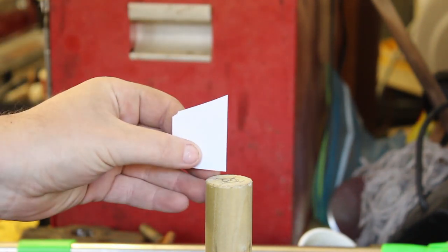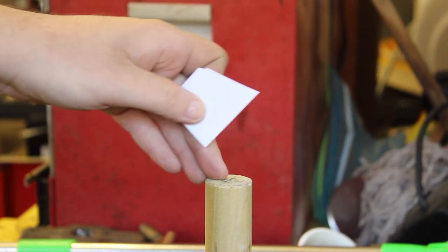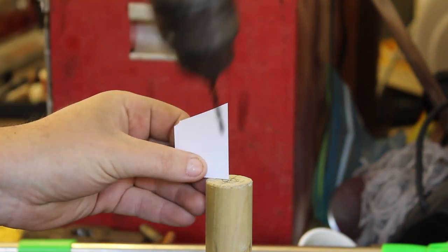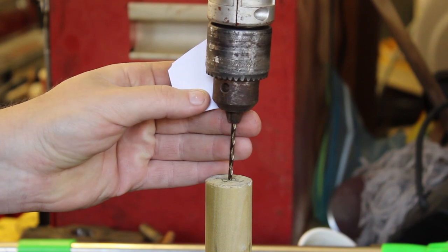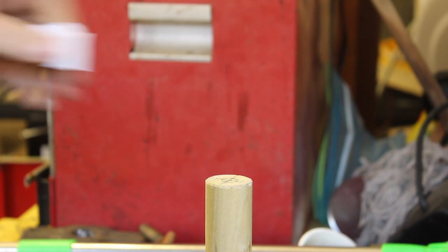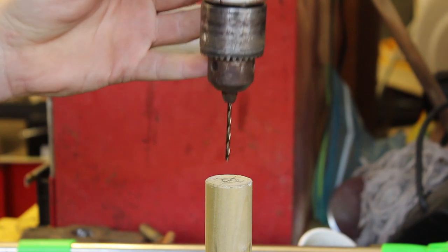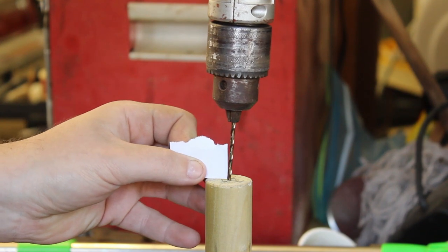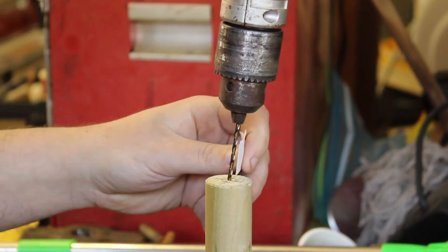Now we're going to drill a hole. To get the hole straight down at a 90 degree angle to the end, what I'm going to do is take a piece of paper, and this gives you a 90 degree edge. You start with the small drill bit. What you do is you get your 90 degree angle, get your drill bit, make sure it's centered, 90 degrees here, 90 degrees over here.